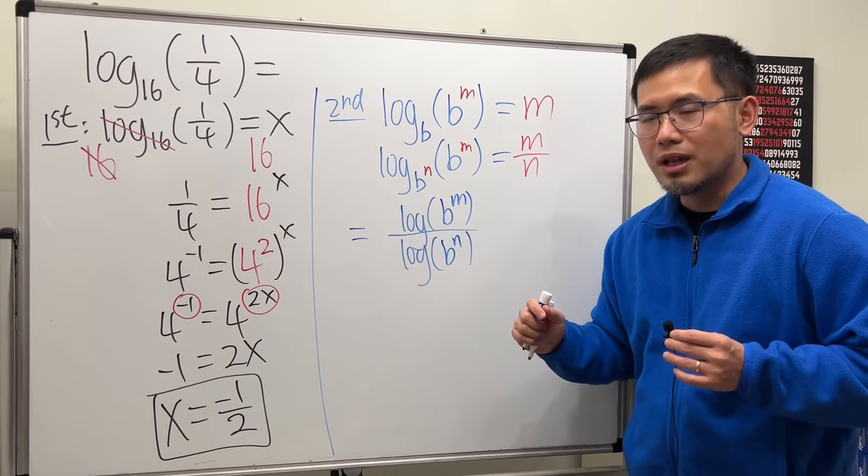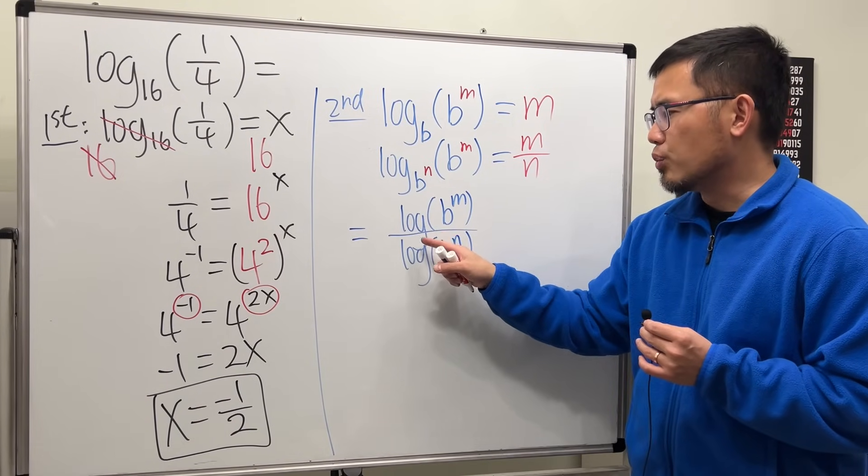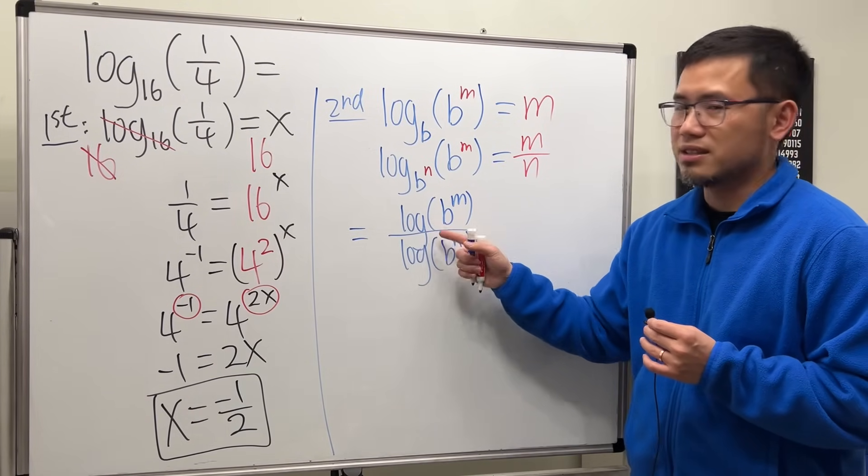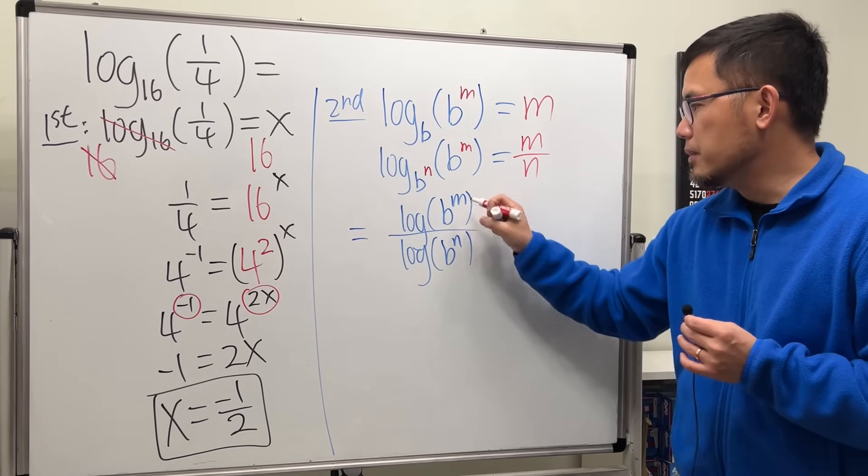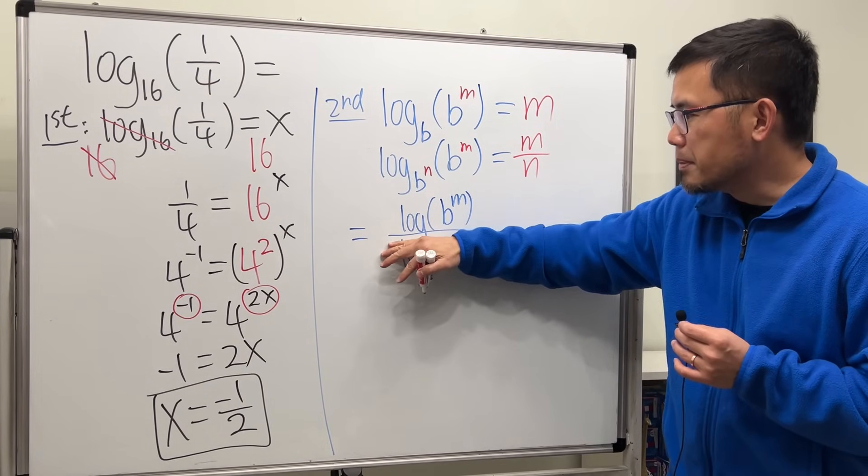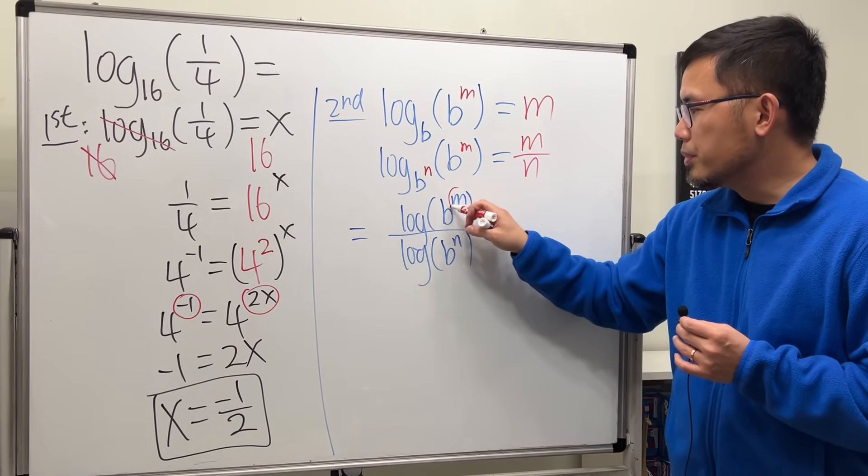So that's the change of base formula, and you can use any log that you want. I'm just taking log with base 10. From here you see that if you just have the top, log of b to the n, we can put the m to the front by the log property.